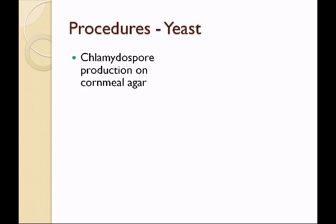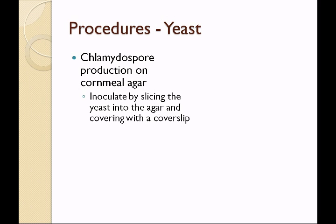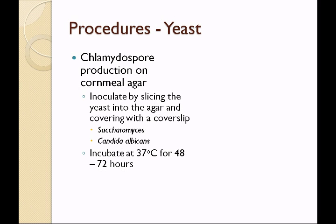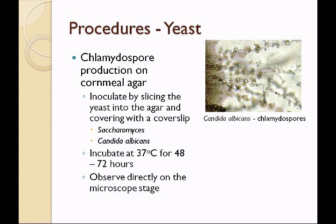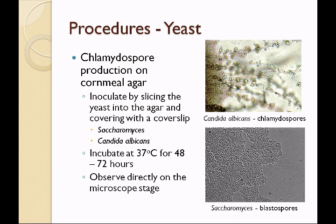In order to identify yeast, we are going to do chlamydospore production using two yeasts. We will inoculate Candida albicans or Saccharomyces by taking a small amount on the tip of an inoculating needle and slicing it down into the agar about an inch long, then covering it with a cover slip. One student will do Saccharomyces, the other will do Candida albicans on the same plate. We'll incubate at 37 degrees Celsius for 48 to 72 hours and then observe the plate on the microscope stage for spore production. Candida albicans is expected to make chlamydospores whereas Saccharomyces will make blastospores and does not produce chlamydospores in cornmeal agar.